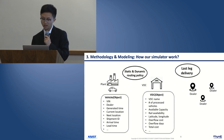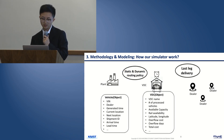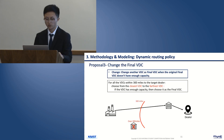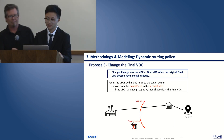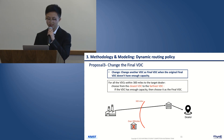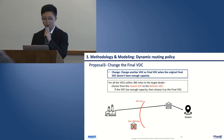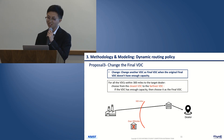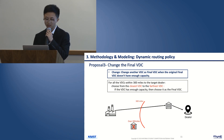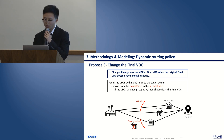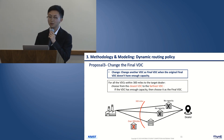We have an animation to show how it works: VDCs are generated, and vehicles travel from plant to final VDC. We change another VDC as the final VDC when the original final VDC doesn't have enough capacity. In our model, for all VDCs within 300 miles of the target dealer, we choose from closest to farthest. If a VDC has enough capacity, we choose it; if not, we choose another. But we won't choose a final VDC beyond 300 miles. If no VDC within 300 miles has enough capacity, we still choose the closest one.